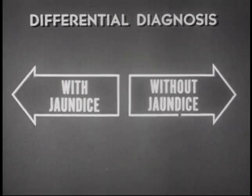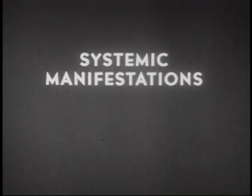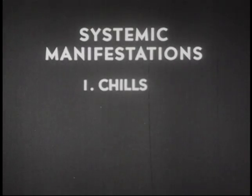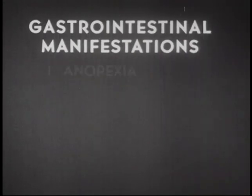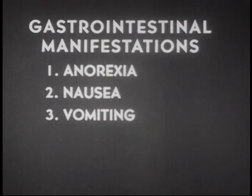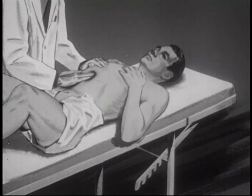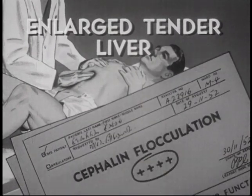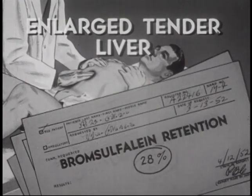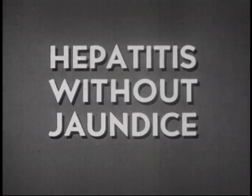Hepatitis without jaundice, because of its systemic and gastrointestinal manifestations, must be considered in the diagnosis of many conditions of acute onset. The systemic manifestations include chills, fever, malaise, and headache. The gastrointestinal manifestations are anorexia, nausea, vomiting, diarrhea, and abdominal pain. In a patient with any of these symptoms, hepatitis should be considered. An enlarged, tender liver and positive liver function tests establish the diagnosis of hepatitis without jaundice.